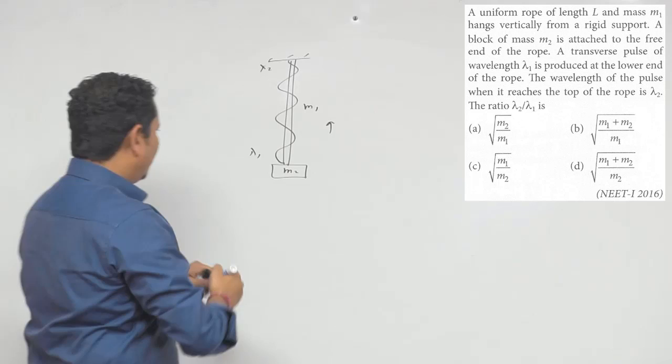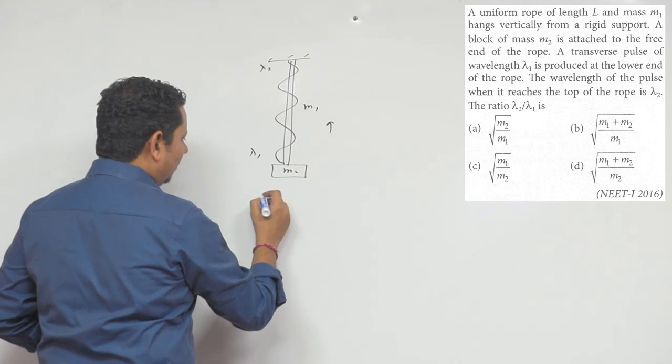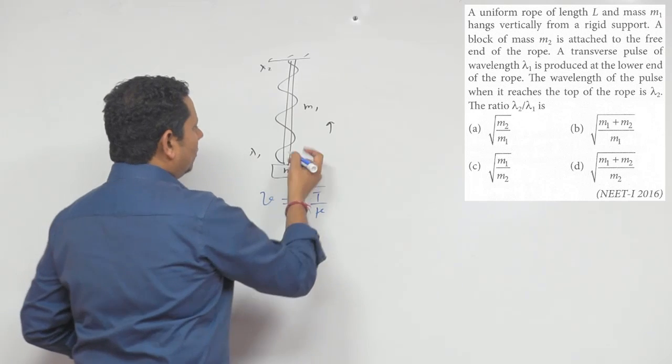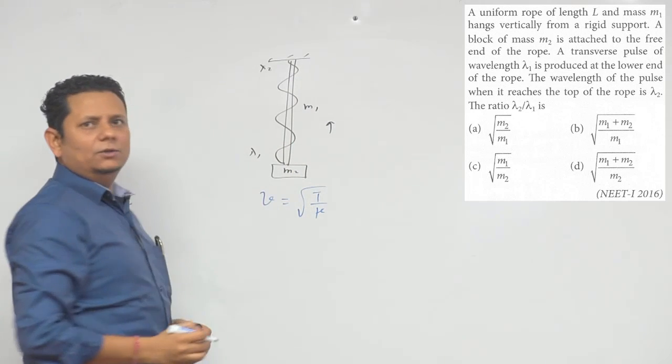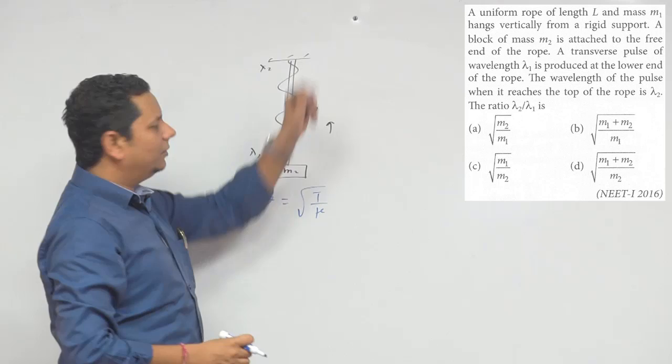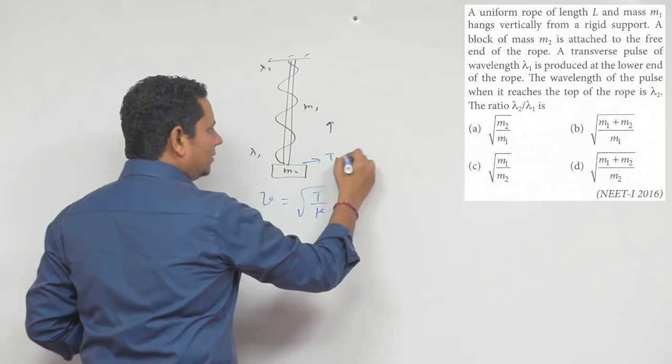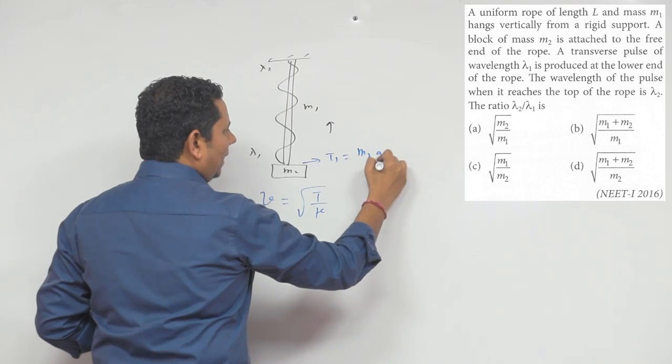Now, we know that the velocity of the wave is the square root of T by mu. The velocity changes because the tension is different at different points. Here at the bottom, the tension is M2g.